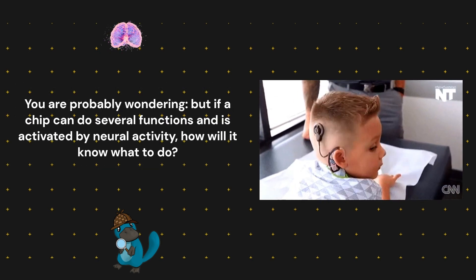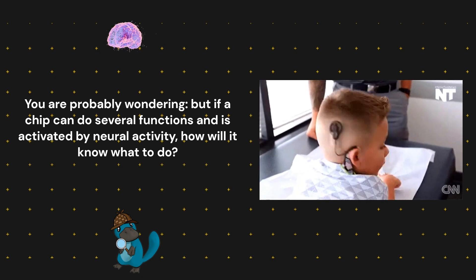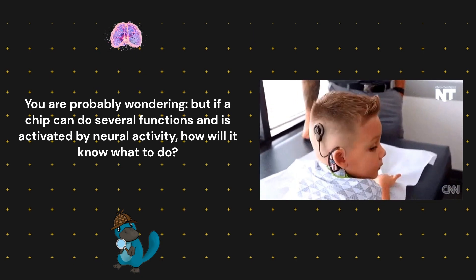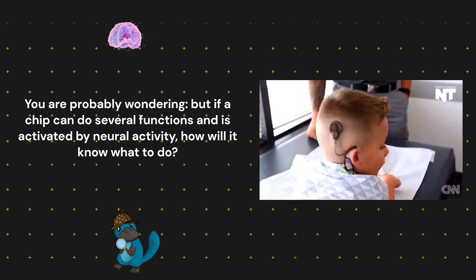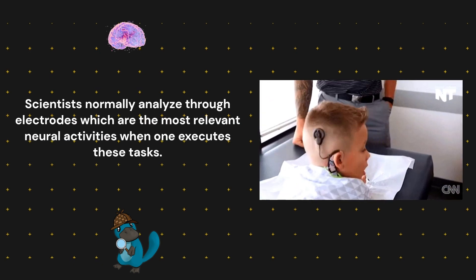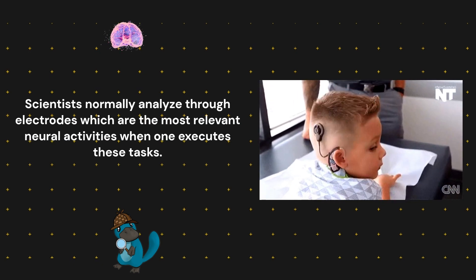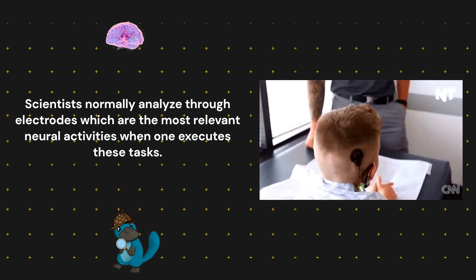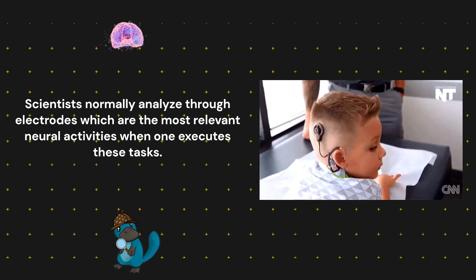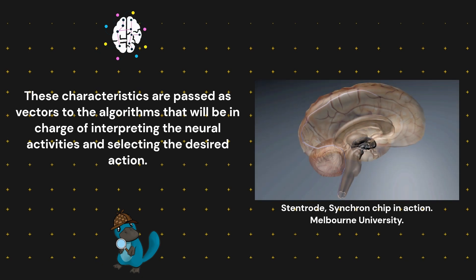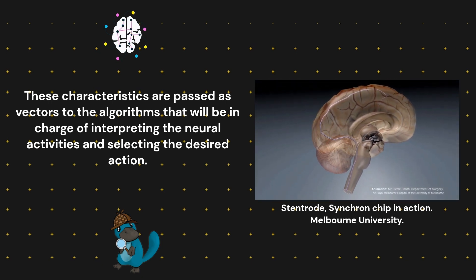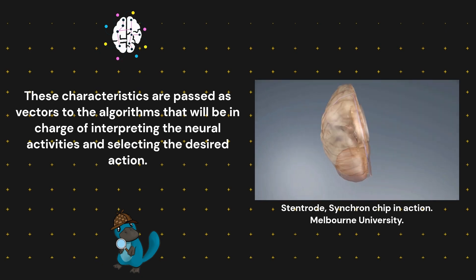You are probably wondering: if a chip can do several functions and is activated by neural activity, how will it know what to do? Scientists normally analyze through electrodes which are the most relevant neural activities when one executes certain tasks. These characteristics are passed as vectors to the algorithms that will be in charge of interpreting the neural activities and selecting the desired action.